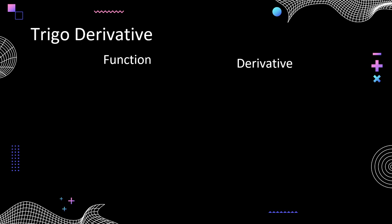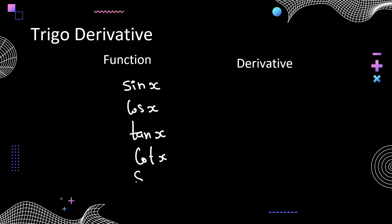We are just doing a recap of the formulas. This video is meant for 12th-grade students who have already seen derivatives — all these formulas should be known. Now suppose I give you trigonometric functions. We have learned 6 trigonometric functions: sin(x), cos(x), tan(x), cot(x), sec(x), and cosec(x). I want to talk about the derivatives of these functions.